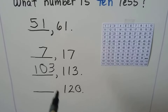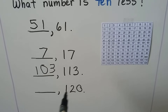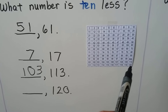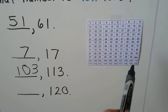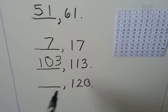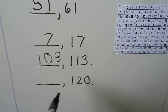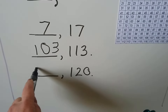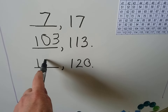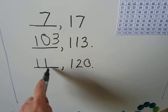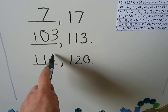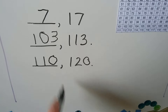What number is 10 less than 120? We find 120 on the chart and go up one row — it's 110. The number in the tens place became one smaller, and the 100 stayed the same. The tens place became one smaller, so it's a 1 — that's 1 smaller than 2 — and the ones place stays the same, so it's 110.